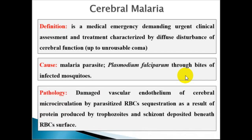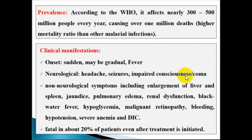The pathophysiology involves sequestration of infected red blood cells within blood vessels, venules, and capillaries. This occurs due to proteins expressed by trophozoites that interact with glycoproteins on the endothelium of blood vessels. This leads to obstruction of blood vessels, causing local hypoxia and necrosis of cells.